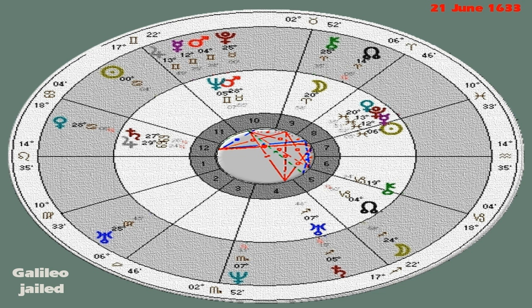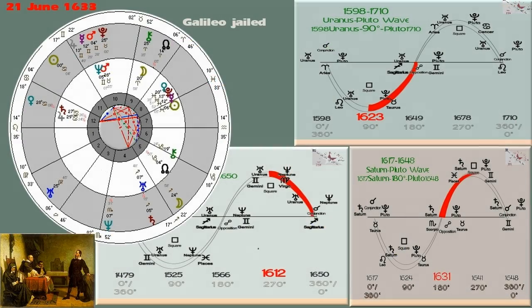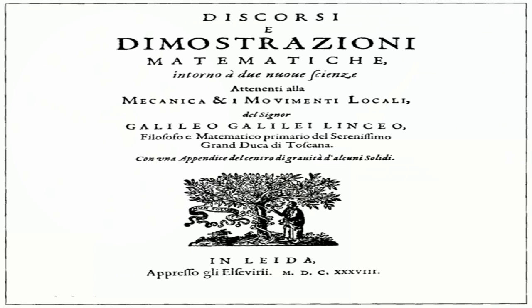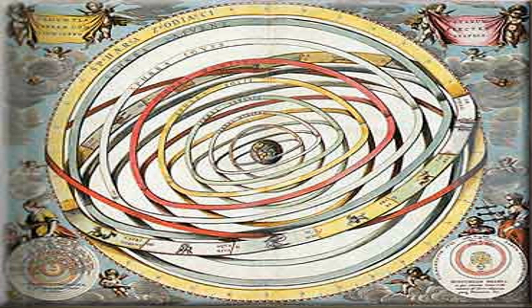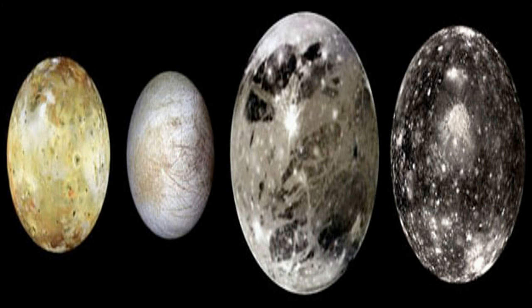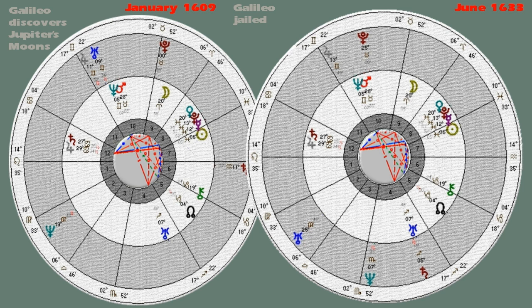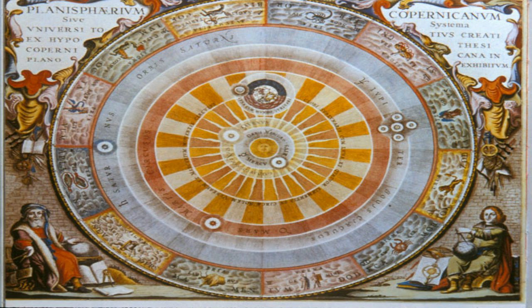This is how we show how people make history — the transits in people's charts show how people make history. Galileo was particularly famous as a scientist who created our modern system of physics, breaking away from Aristotle, Plato, and the Church. He was on trial for heresy for writing the 'Dialogue of the Two World Systems,' in which he used a fictional character that the Jesuits convinced the Pope represented the Pope himself defending Ptolemy.